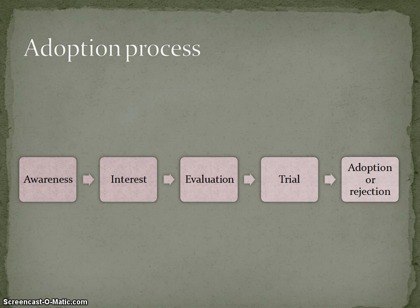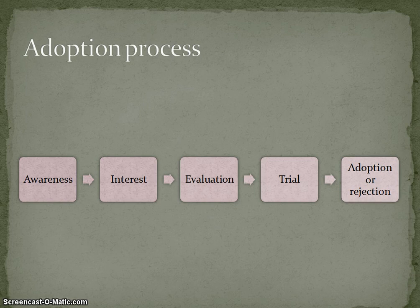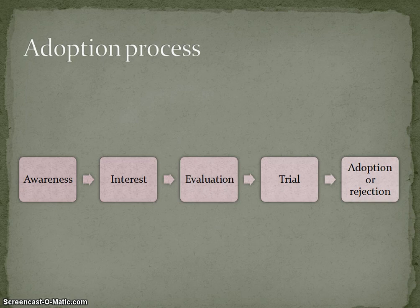Diffusion process is talking about how a product reaches from the manufacturer to the market and in the meantime, how it is getting into the minds of the customer. But adoption process is at the micro level and it is about how people will get adapted, or how people will buy or reject the product.